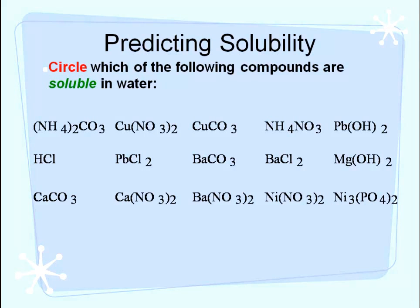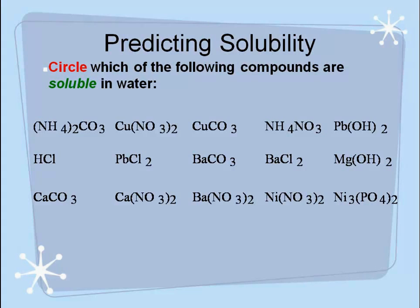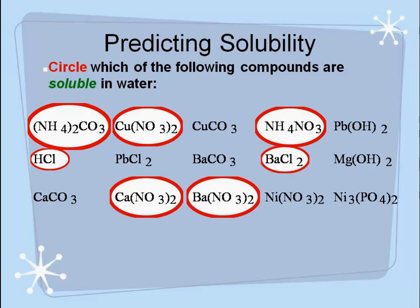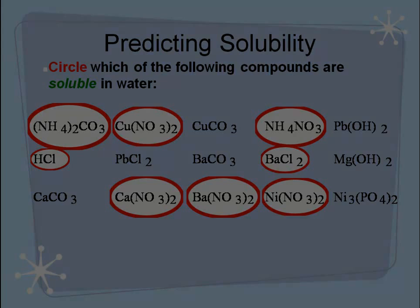On this next slide, pause your video again, look over all of the compounds, and determine which ones are soluble in water. Welcome back. Ammonium carbonate is soluble in water, and so is hydrochloric acid. Copper 2 nitrate and calcium nitrate are soluble compounds. Barium nitrate is also soluble, along with ammonium nitrate. Barium chloride is also soluble in water, and so is nickel 2 nitrate. Use your solubility rules to identify the soluble compounds.